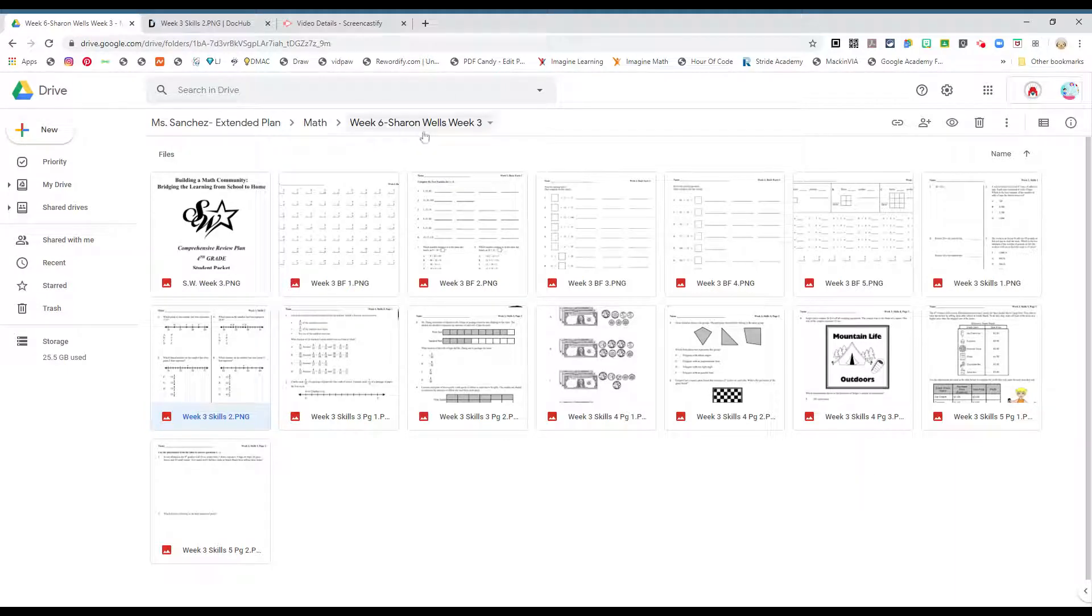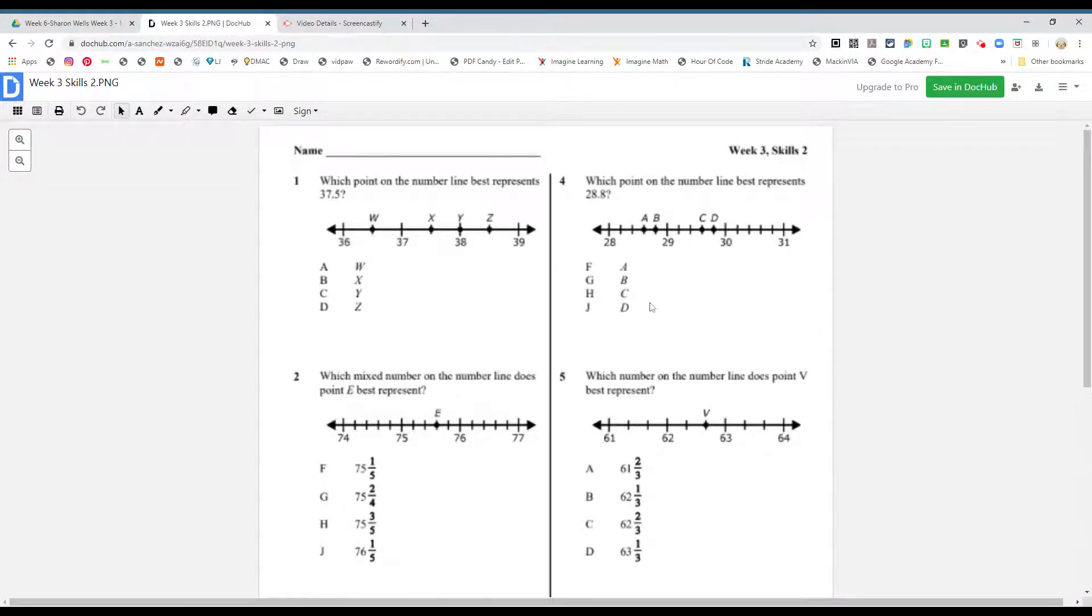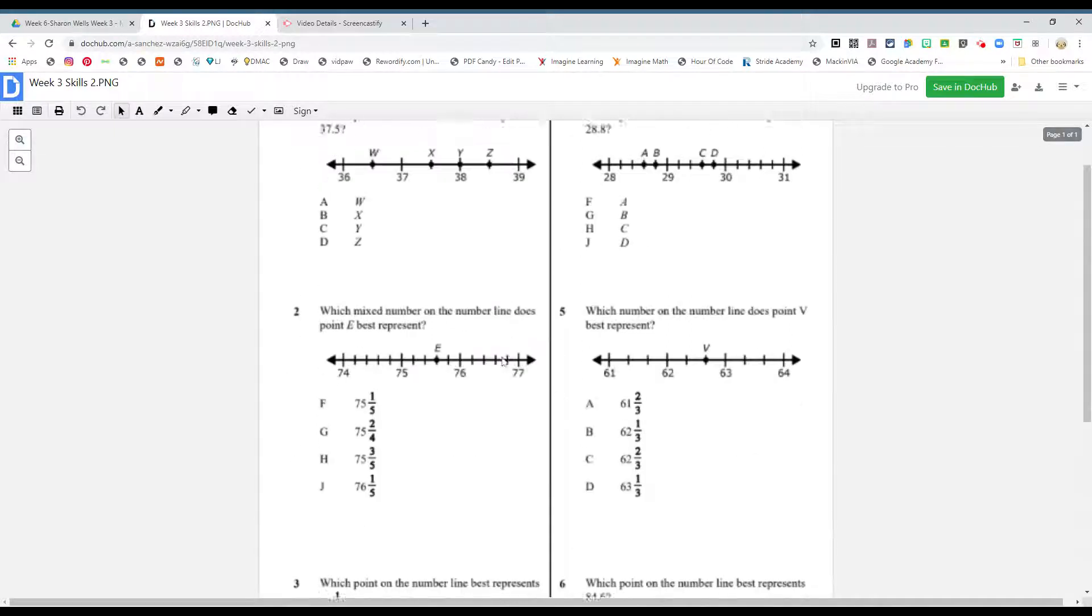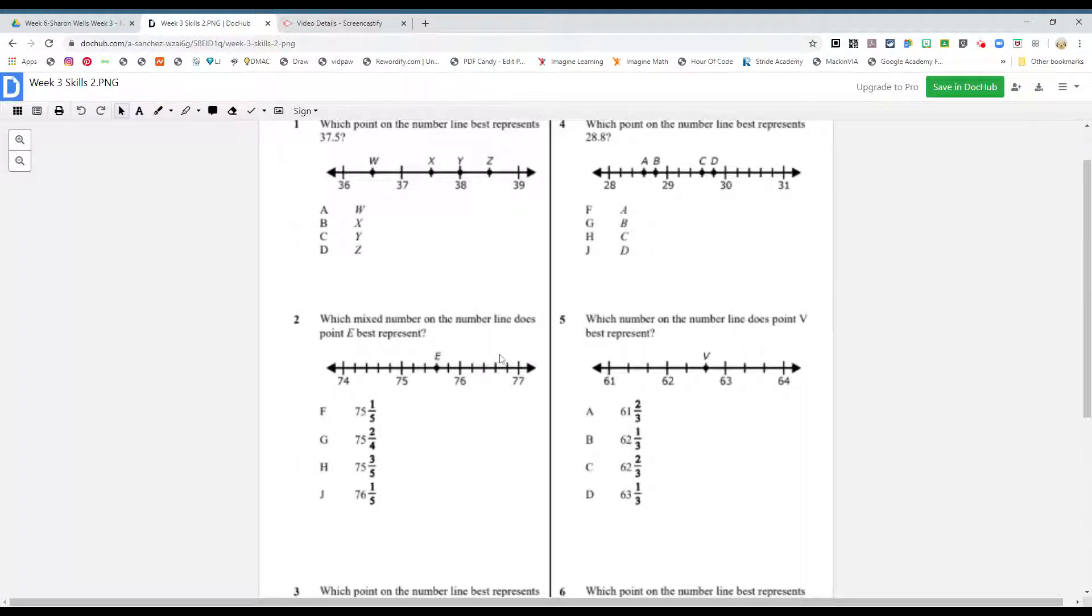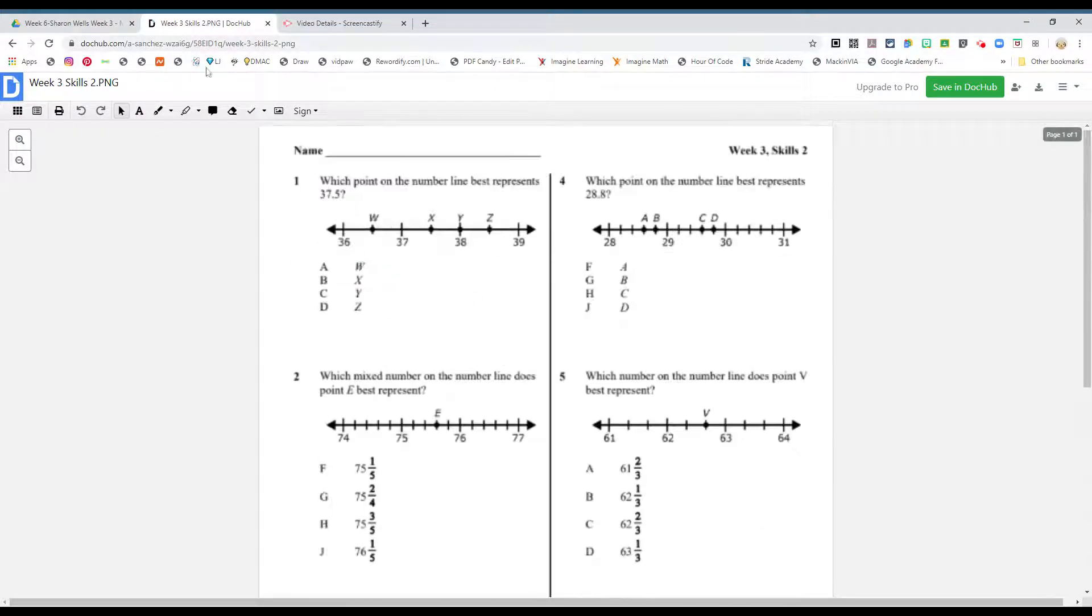Okay boys and girls, we're going to continue. Please, Sharon Wells week three skills two, and it looks like it's some decimal points boys and girls. Okay, here we go. There's six. I'll help you with two, but then I'm going to let you loose.